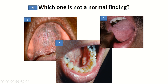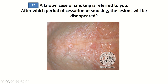Which one is a normal finding? What you see here is geographic tongue, torus mandibularis as bone formation, and multiple umbilicated lesions on the palatal surface of the oral cavity indicative of nicotine stomatitis. The correct answer is 1 — geographic tongue — which is not an abnormal finding.